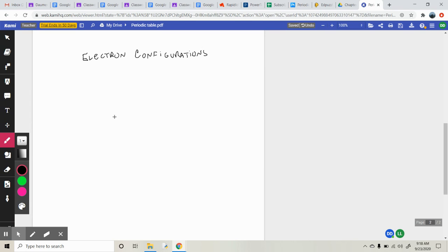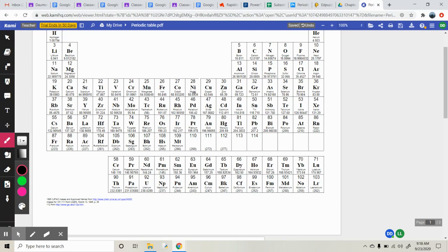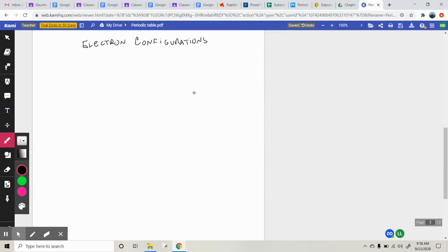And it helps us figure out the layout of the electrons. So if I go up here and I look at, let's say, nickel, it has an electron configuration of 1s2, 2s2, 2p6, 3s2, 3p6, 4s2.